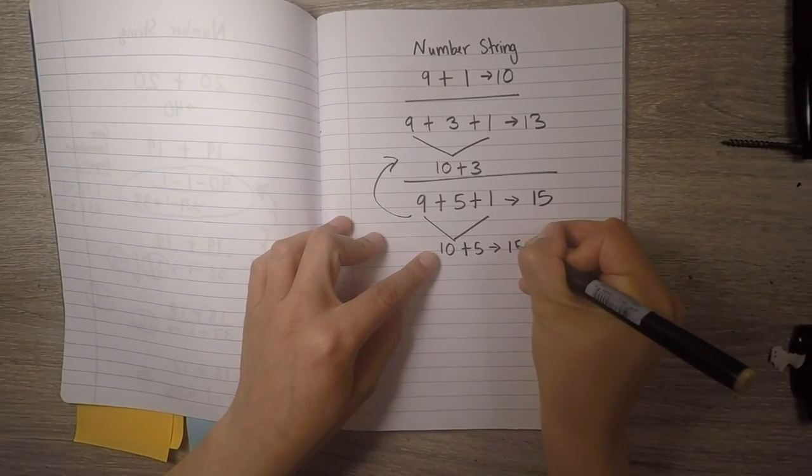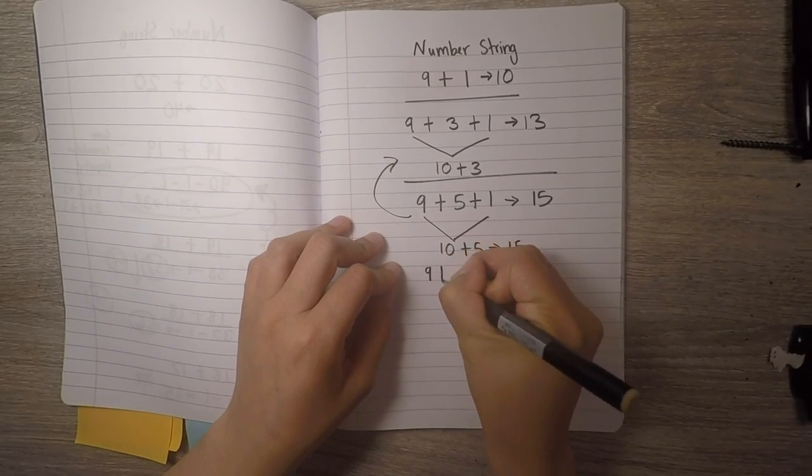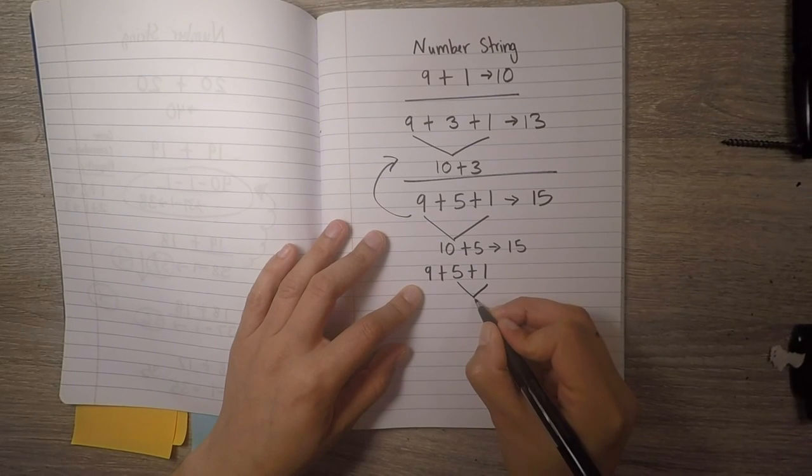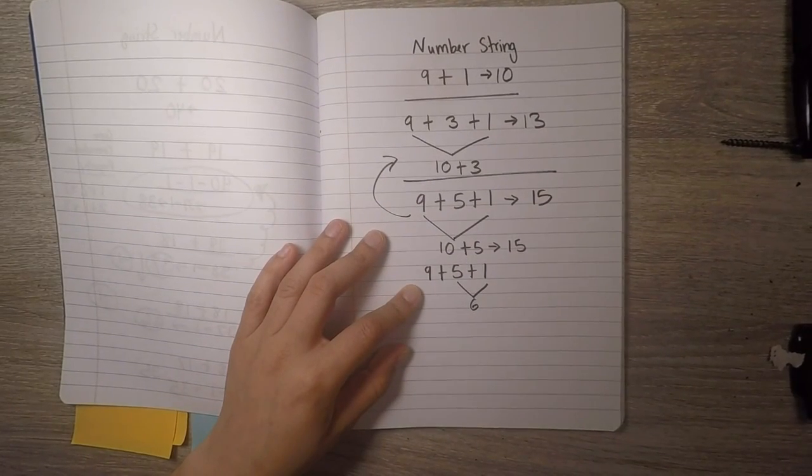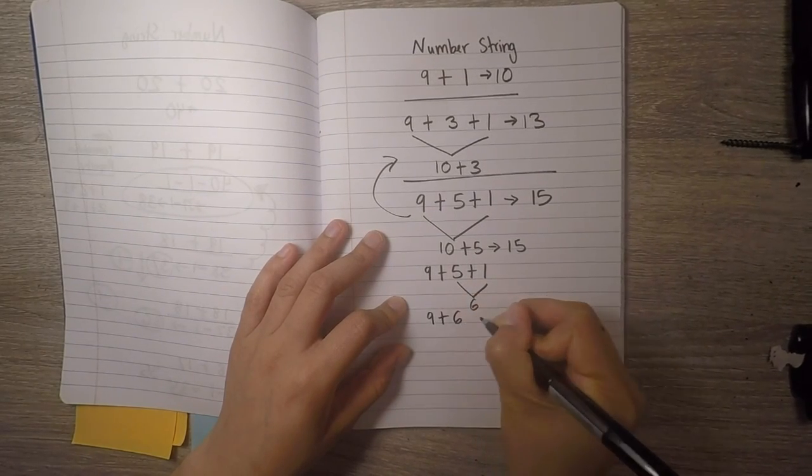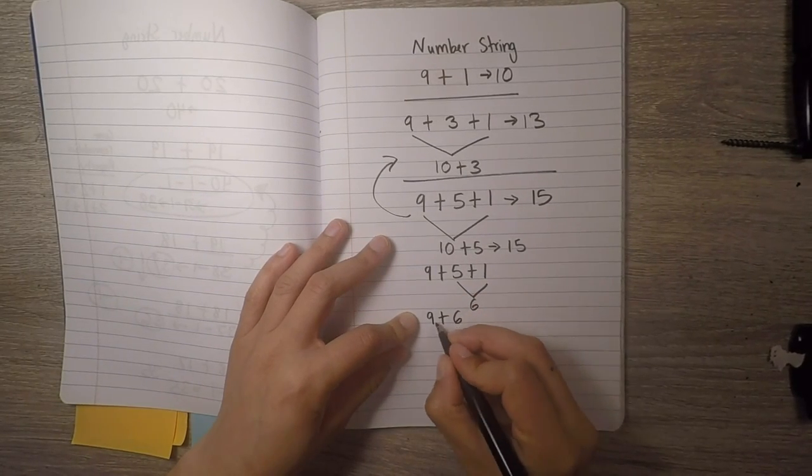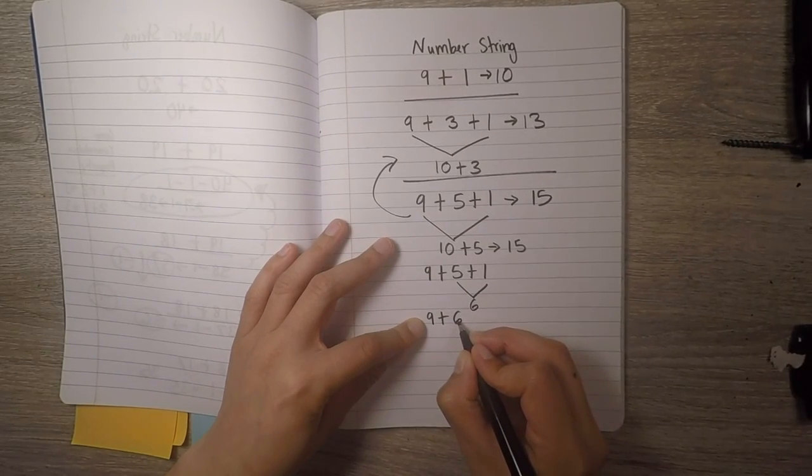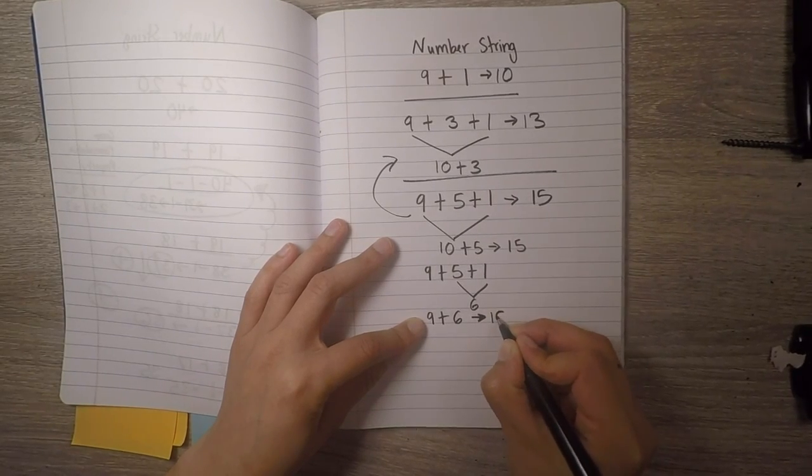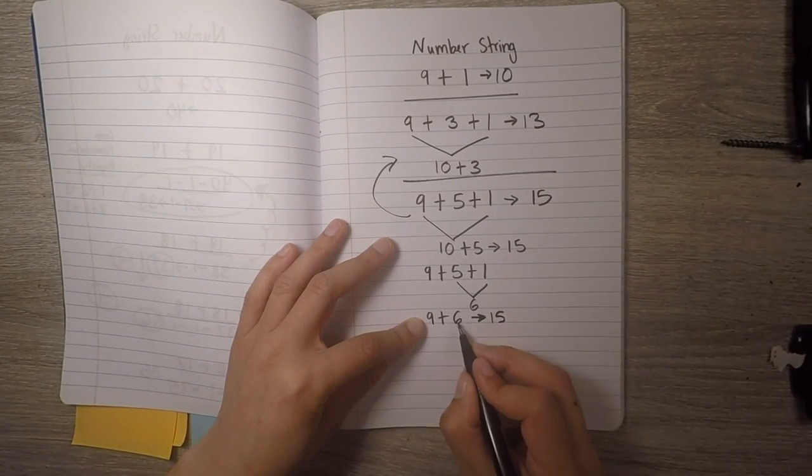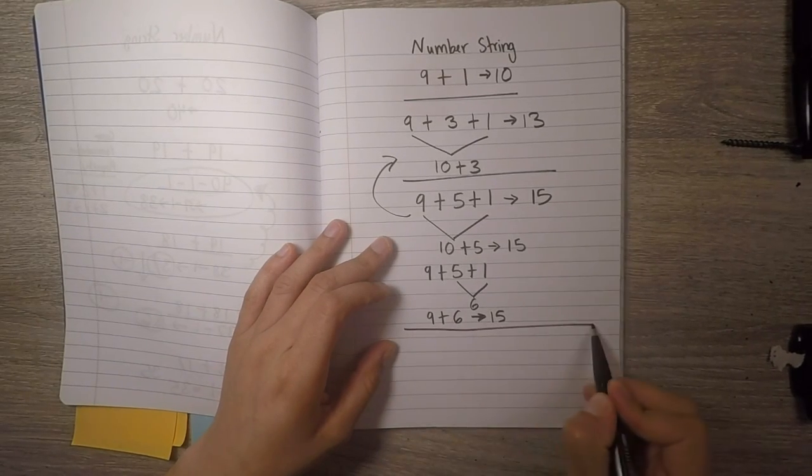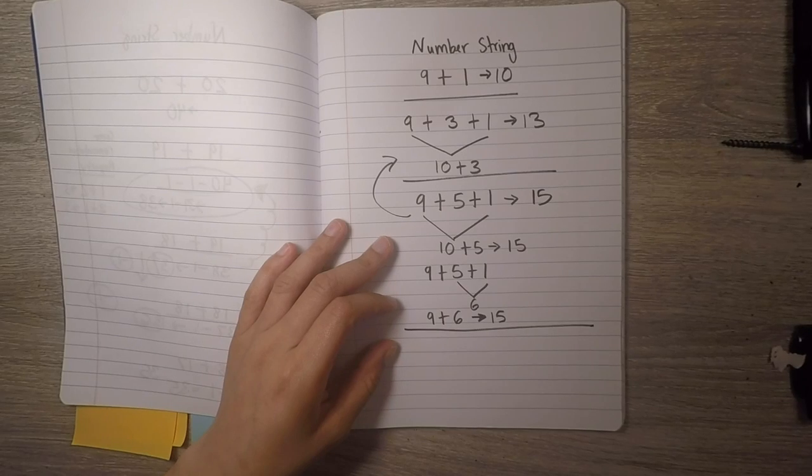But some of you might have also done something like this, where you took the five and the one, made a six. Use your number facts that you might have been practicing with the nine, where you know that trick, where if you see the number following the nine, like nine plus six, then you know that when you add, it has a pattern where it's like one less. Did you see that? Some of you have been practicing that in your rooms too. And that's okay. You can be as creative as you want when you're solving these number sentences.